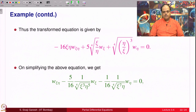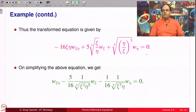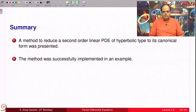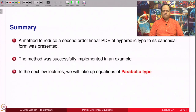On simplification we get the canonical form equation; dividing through so that the coefficient of w_ξη is 1 requires that ξ and η are never zero, which holds in the first quadrant. We can thus write down the domain in which this canonical form is valid. The method to reduce a second order linear PDE of hyperbolic type to its canonical form has been presented and successfully implemented in the example. In the next few lectures we will take up equations of parabolic type and of elliptic type and find canonical forms for them.